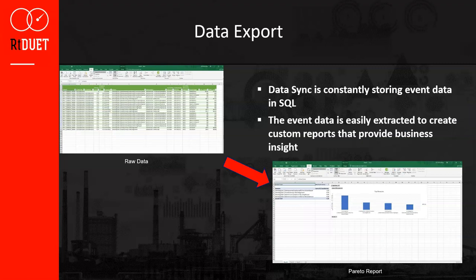Finally, we want to touch on how easily data in RTDuet can be exported to another program for advanced analytics or reporting. All data generated by RTDuet is stored in Microsoft SQL Server tables, so any application that can interface with SQL Server can easily access this data. Since RTDuet is fully integrated with the OSIsoft Pi system, we can also leverage Pi user tools such as PI Asset Framework, Datalink, PI Vision, and ProcessBook to analyze or display data. This slide shows the capture of event data within Excel and a resulting pivot table report providing analysis of offending downtime events.